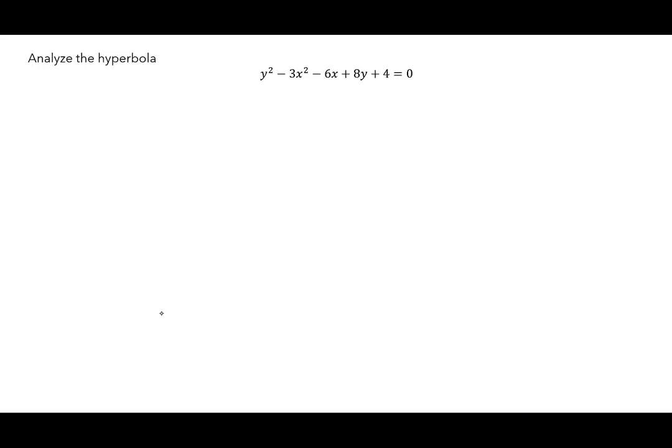We'll start with an analyzing-the-hyperbola question where you first have to put it into the correct format. Starting with y² - 3x² - 6x + 8y + 4 = 0. Let's put the y's together: y² + 8y, then -3x² - 6x, and move the 4 to the other side so it becomes -4.